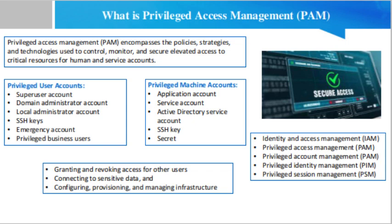Automated processes use SSH keys to gain access to firewalls, routers, and switches. Secrets — also called privileged credentials — include API keys, passwords, SSH keys, tokens, and certificates that allow both human and service accounts to securely authenticate to privileged systems.